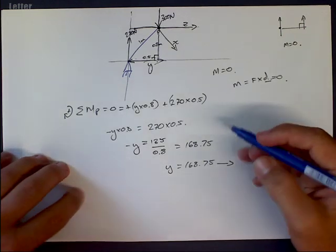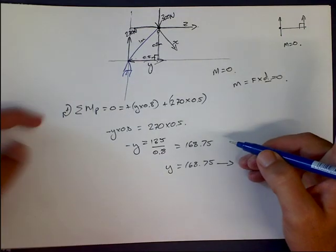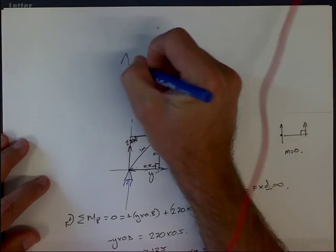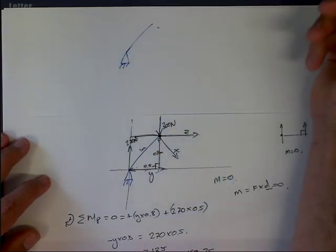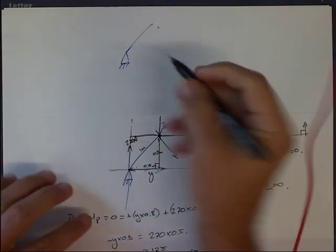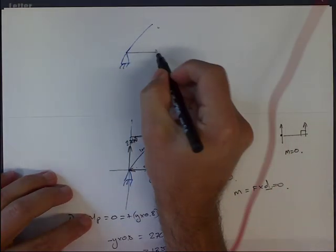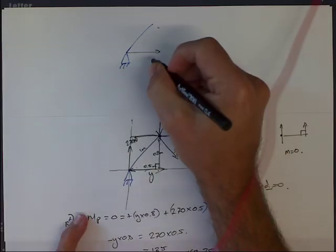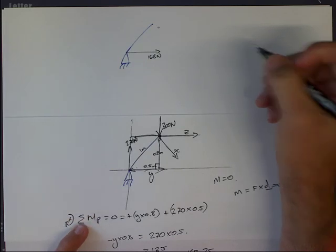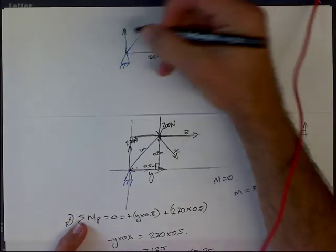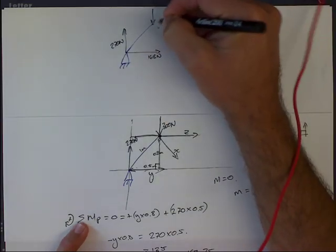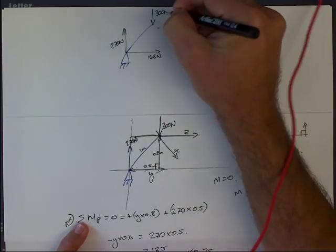Now I'm going to move on to calculating x and z. Let me redraw our truss now that we've sectioned it. We have a force here y, which we found was around 168 newtons going to the right. We've got our reaction force over here of 270 newtons, and our force coming down of 300 newtons, which we all know.